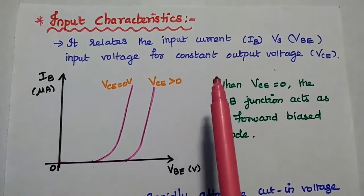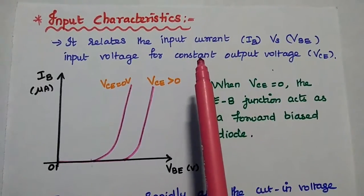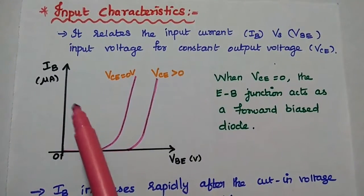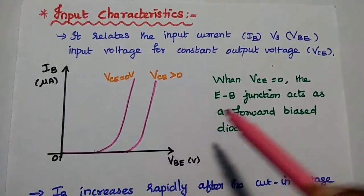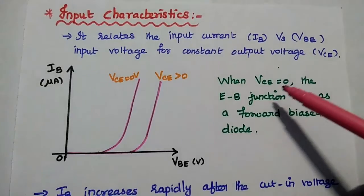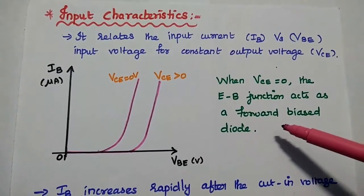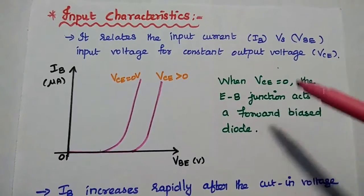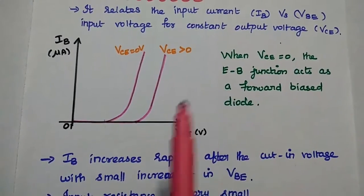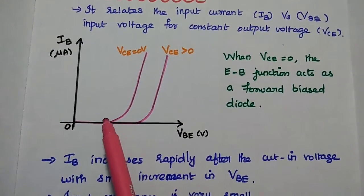Next, input characteristics of CE configuration. Here we analyze the input parameters with respect to output voltage — input parameters are base current IB and base emitter voltage VBE. We draw the graph for IB versus VBE with VCE as constant. First, we consider VCE equal to 0, meaning the reverse bias voltage at the output side is 0. At that time, the emitter base junction can act as a forward biased diode, and we get a graph similar to a forward biased diode up to the cut-in voltage.